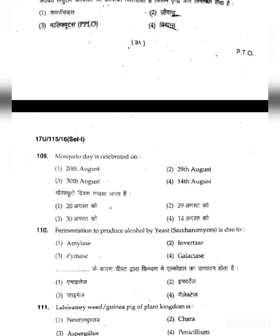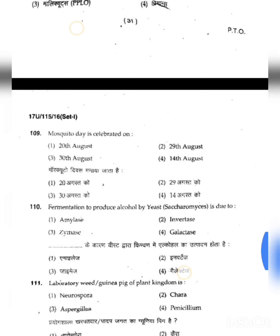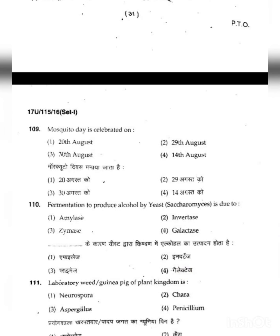Question 109: Mosquito Day is celebrated on which date? The answer is 20th August. This is a fact to remember — Mosquito Day is observed on 20th August.